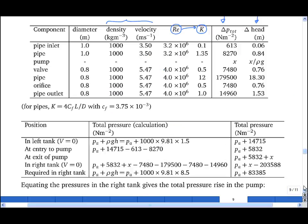At the top of the left tank, the speed is zero, so the total pressure is Pa, atmospheric pressure, plus rho gh, where h is 1.5 meters. And I've worked that out here. At entry to the pump, we've lost some total pressure due to the pipe inlet, and then due to the pipe itself, so the total pressure has reduced. At exit to the pump, we have the total pressure plus x, which is our unknown.